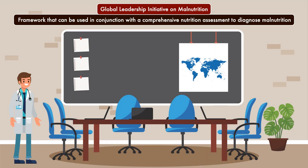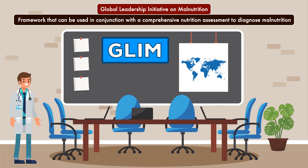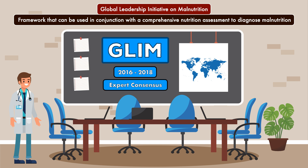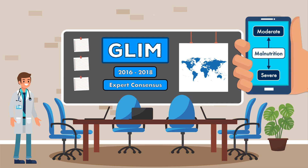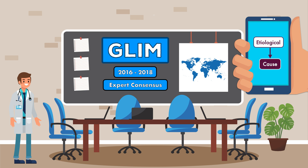The Global Leadership Initiative on Malnutrition, or GLIM, is a framework that can be used in conjunction with a comprehensive nutrition assessment to diagnose malnutrition. It was developed over a three-year period from 2016 to 2018, created based on expert consensus among leaders in clinical nutrition, and culminated in the publication of a consensus report from the Global Clinical Nutrition Community. GLIM creates a path for clinicians to classify malnutrition as either moderate or severe, and it also has an etiological component, meaning it helps to identify the cause of malnutrition.